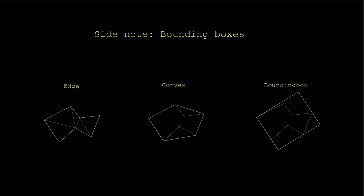Now we need to build bounding boxes around our islands — this bounding box algorithm is used many times in other parts. First, you find the outer edge of the geometry and make it convex by removing any concave edges. Then you go through each edge of the convex shape and test: if I make a bounding box using this axis, how big does it get? You keep doing that until you find the smallest possible bounding box for that particular shape.